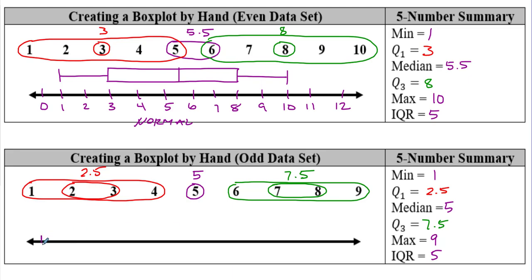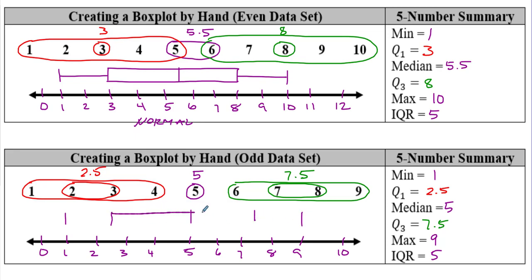On the number line for the odd data set, we start below one and go to ten, with five smack in the middle. We draw our five tick marks at one, 2.5, five, 7.5, and nine, then use the three middle values to make our rectangle and extend the whiskers. This also looks like a normal distribution — both boxes are approximately equal in length and whiskers extend the same amount. A longer whisker on one side can indicate skew, with the majority of skew found in the box.